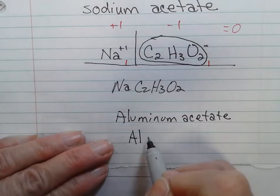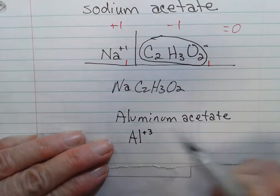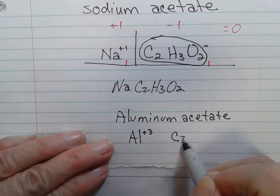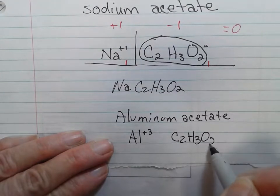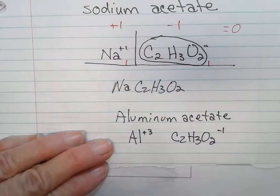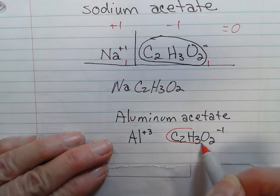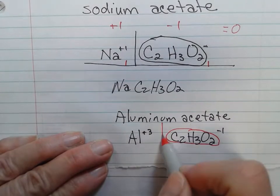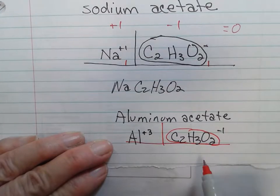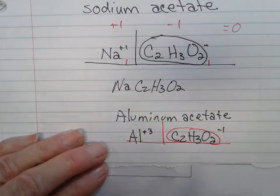Aluminum is a plus three charge, and then acetate again, C2H3O2 has a negative one charge. Notice that I am putting my polyatomic ion in a circle. I cannot change anything in that circle.